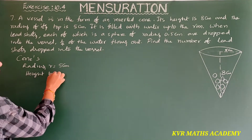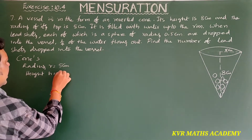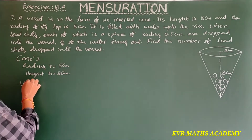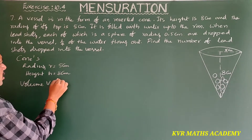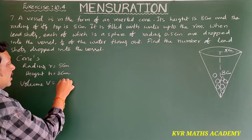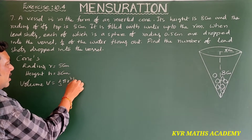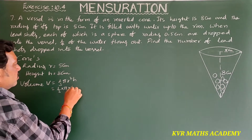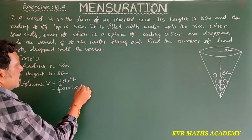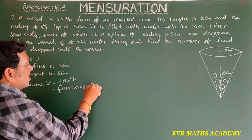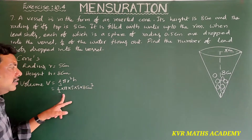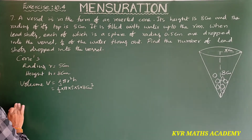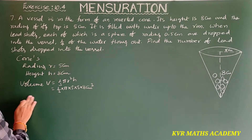Height h is equal to 8 centimeters. Volume of the cone: v is equal to 1/3 × π × r² × h, that is equal to 1/3 × π × 5 × 5 × 8 centimeter cube. Keep it like this, don't simplify. Next, for the spherical lead shots: